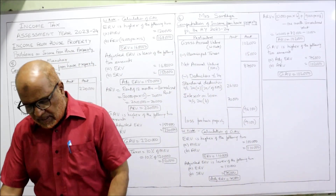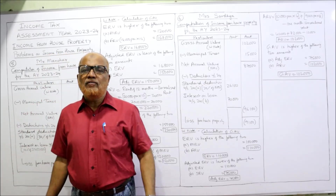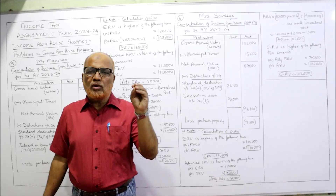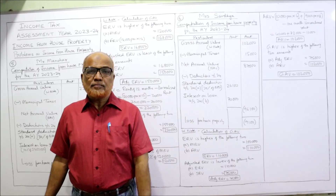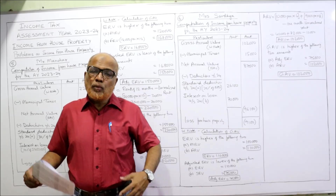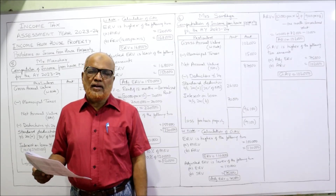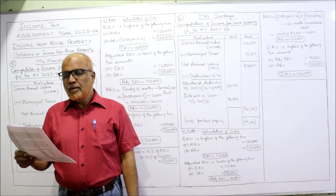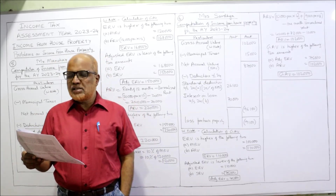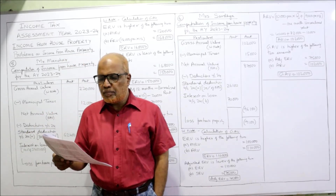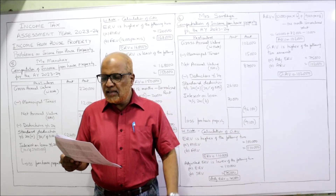Now the sixth problem. In every problem, almost 90% of the points are the same; only one or two points are different, so focus on those. Always maintain running notes of the provisions being explained. Sixth problem: Mrs. Sandhya, 45 years of age, owns a house which was let out to Mrs. Devi on a rent of 10,000 per month. The owner is Sandhya and the tenant is Devi.